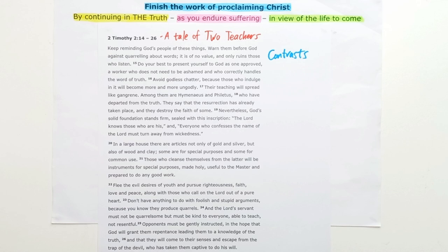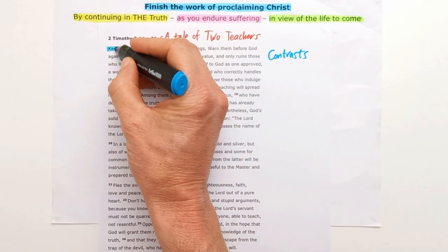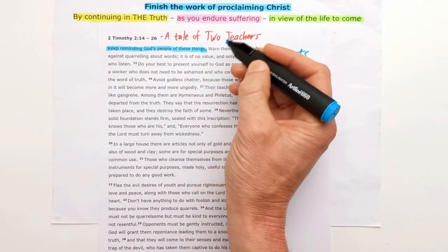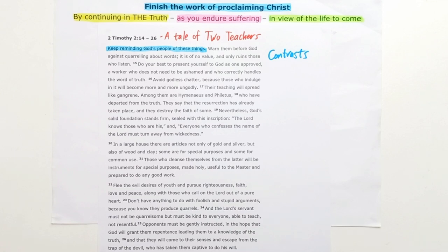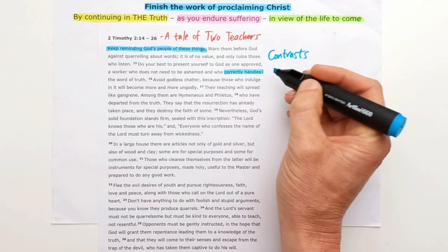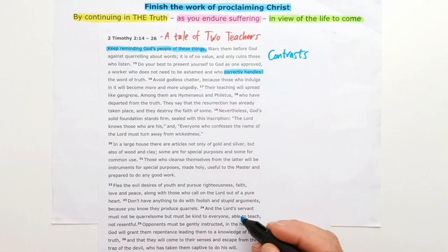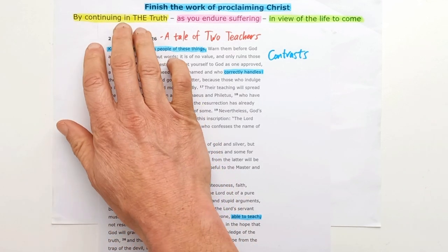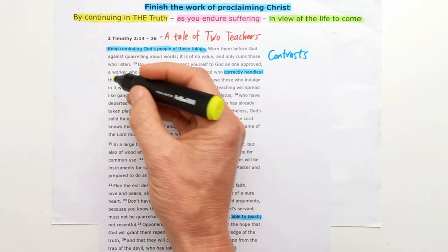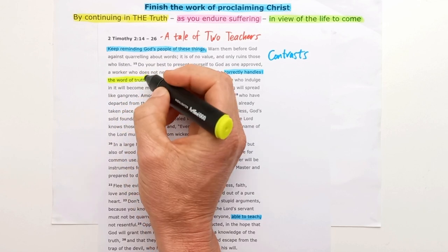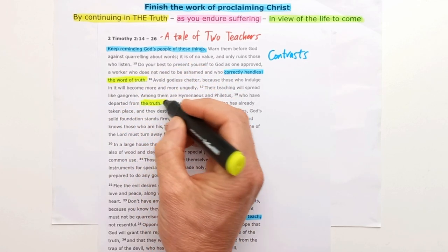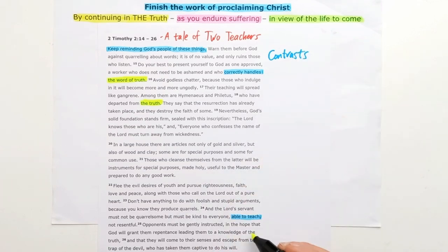In this passage, a couple of the elements of this overarching theme are highlighted. Paul says keep reminding the people of these things — finish the work of proclaiming Christ, keep pointing people towards Jesus. He also speaks of correctly handling the truth and being able to teach. In a big way, this idea of continuing in the truth comes out as Paul speaks about the word of truth a number of times and speaks about those who have departed from the truth.